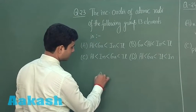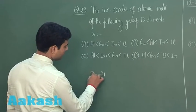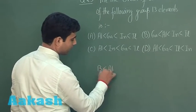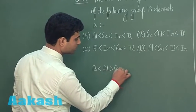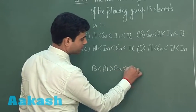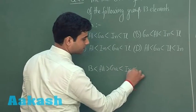In group 13, the smallest size is for boron, then we have aluminum. Aluminum has higher size as compared to gallium, then we have indium and thallium.